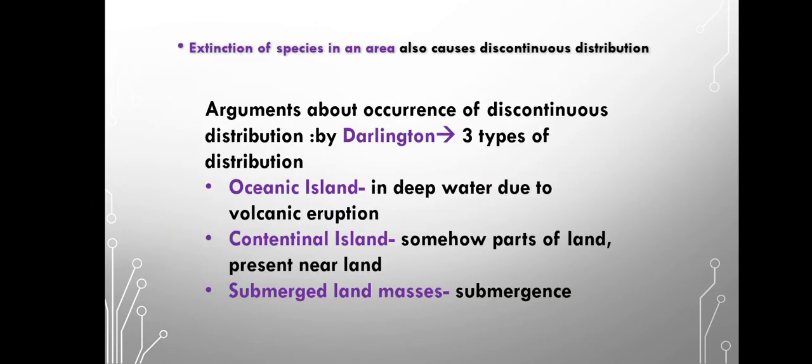Now, if we talk about the reasons for discontinuous distribution, what is the reason behind it? Extinction is the main reason for discontinuous distribution. Maybe an animal was present in some area, but because of certain reasons it went extinct there. So that area is no longer available, making the distribution discontinuous.